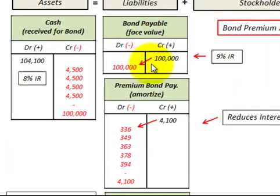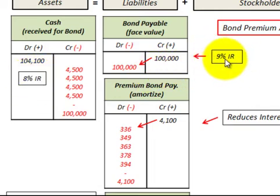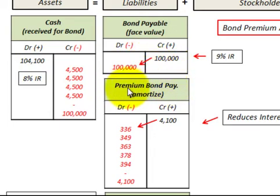Looking at our example here, we issued a $100,000 face value bond. It's a five-year term with 10 semiannual payments and it has a 9% stated rate of interest. When we sold that bond we received $104,100, and that was based on an 8% market rate of interest. So we need a balancing account between this cash and this bonds payable amount, and what we use here would be a premium to bonds payable.